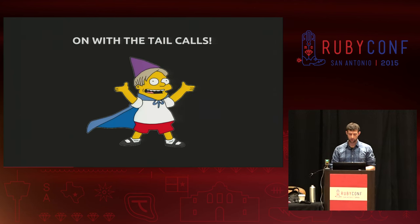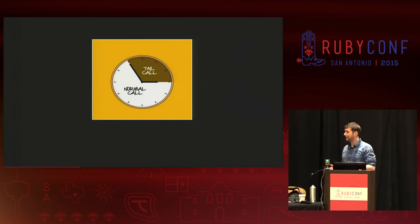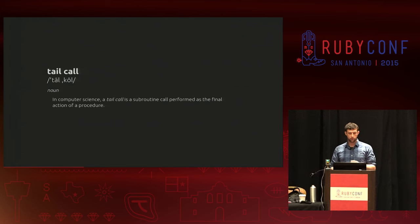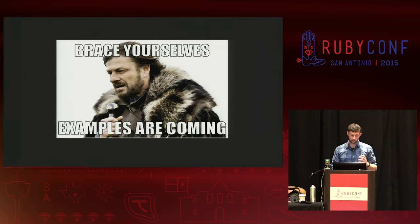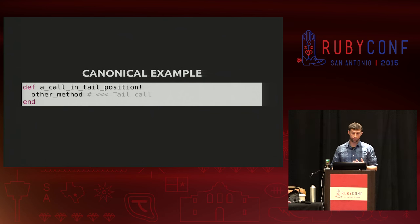So let's get down to our subject. What is a tail call? The dictionary definition of a tail call is a subroutine call performed as the final action of a procedure. Here's your canonical example: you have a method 'a call in tail position' that contains another method as very clearly the last thing the outer method does before it's complete.